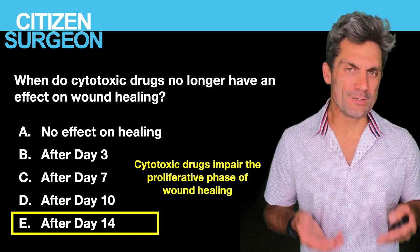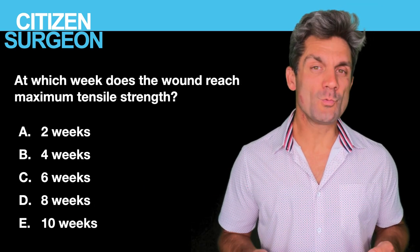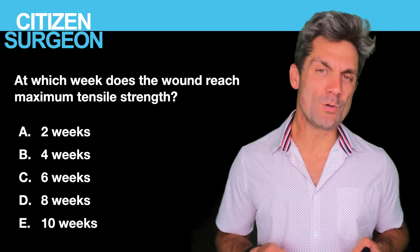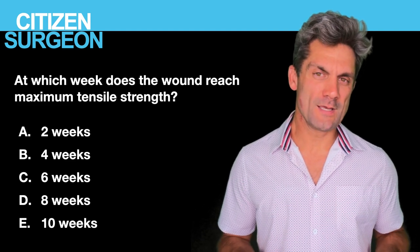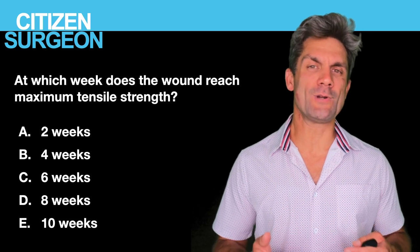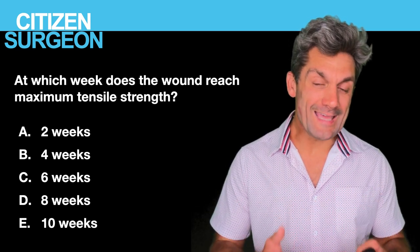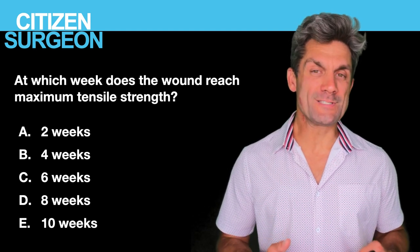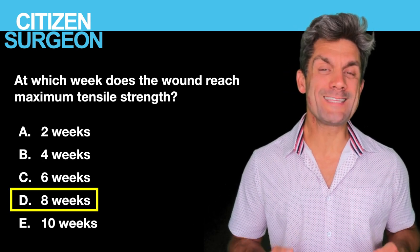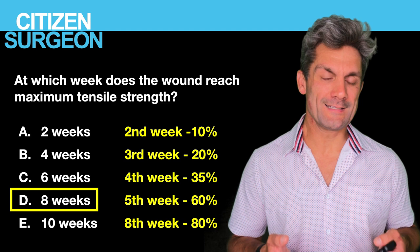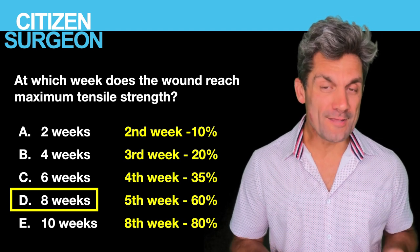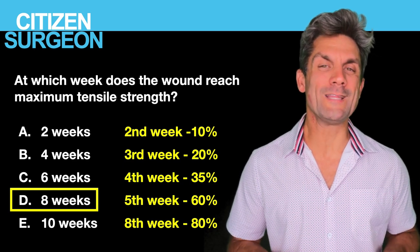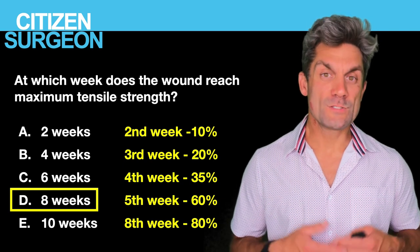Cytotoxic drugs really target the proliferative phase of wound healing. Question eleven: at which week does the wound reach maximal tensile strength? A wound will never reach 100% — it reaches a maximum of 80% tensile strength, achieved at eight weeks. Marching back: at five weeks we're at about 60%, at four weeks about 35%, at three weeks about 20%, and at two weeks only 10% tensile strength.